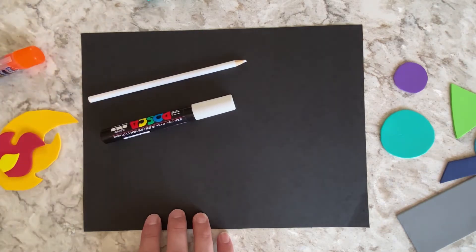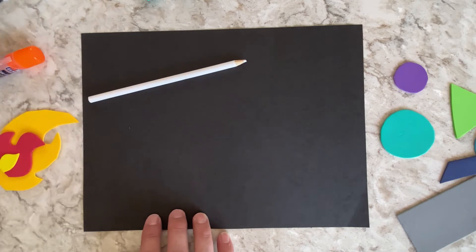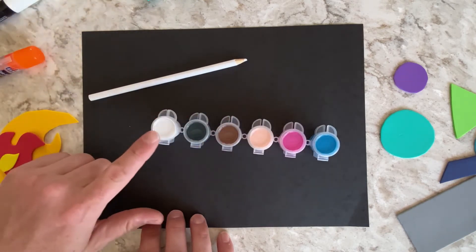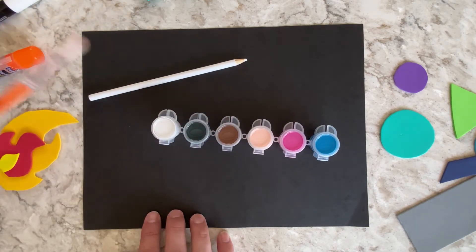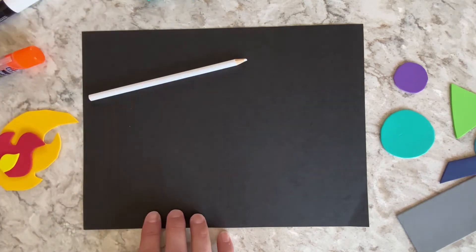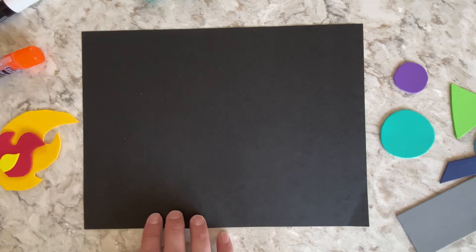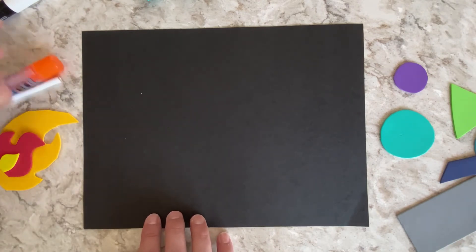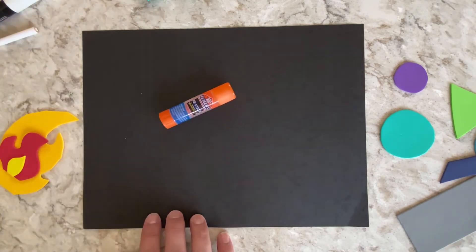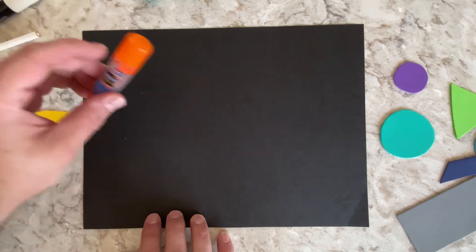Either a white colored pencil, a white crayon, you could do a white paint marker if you have a paint marker, you could do white paint itself with a little tiny brush if you have that available. So whatever you have available that is white and can make marks on the black paper.